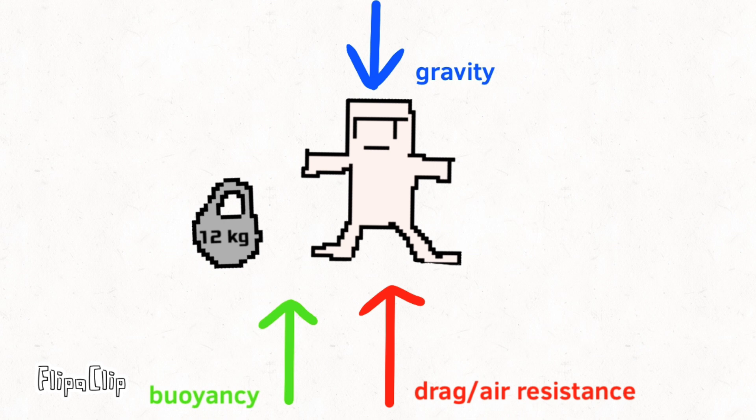Gravity has two opposing forces: buoyancy and drag, or air resistance. Terminal velocity occurs at an equilibrium, which is when all of these forces begin to equalize. Thus, the object stops accelerating, but it doesn't necessarily slow down either.